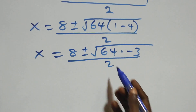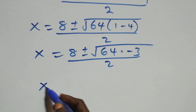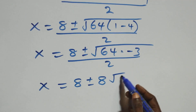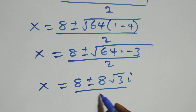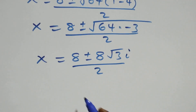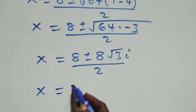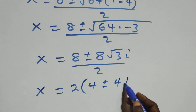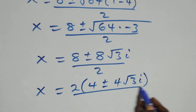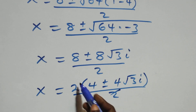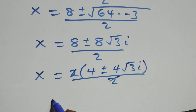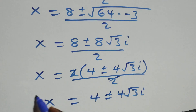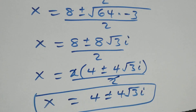Separating the root: root of 64 is 8, and root of minus 3 gives root 3 times i. So x equals to (8 plus or minus 8√3 i) over 2, which simplifies to x equals to 4 plus or minus 4√3 i. These are two complex solutions.